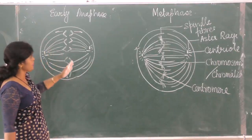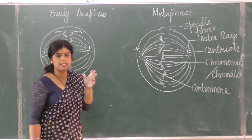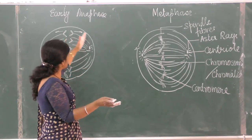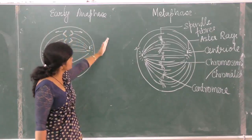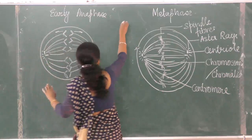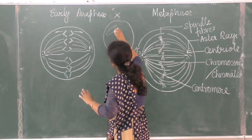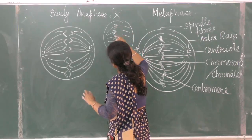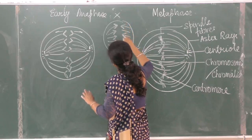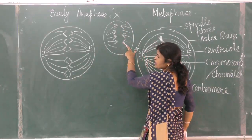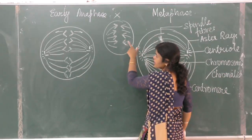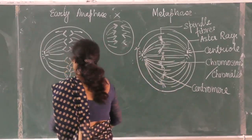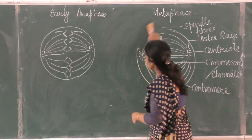This is early anaphase. The characteristic feature of anaphase is that the spindle fibers develop contraction, which causes the sister chromatids to separate and move towards opposite poles. A common mistake: if you draw the diagram with the chromatid arms pointing forward, that is wrong — the centromere is pulled first, not the chromatids. Take care of this, as it is a very common mistake.